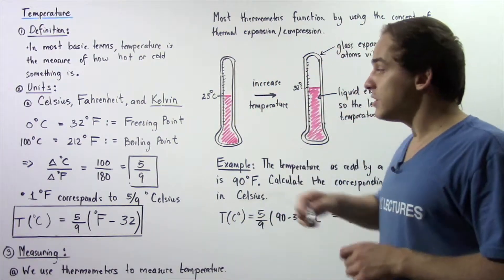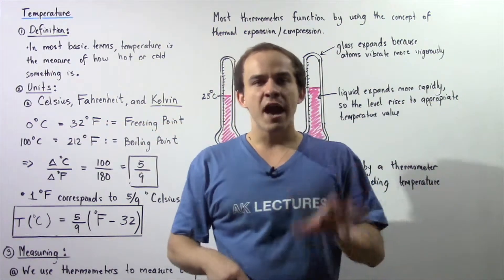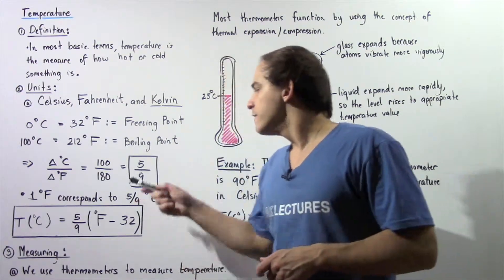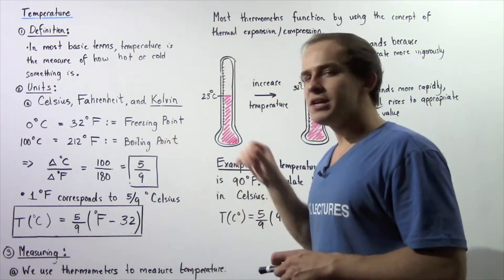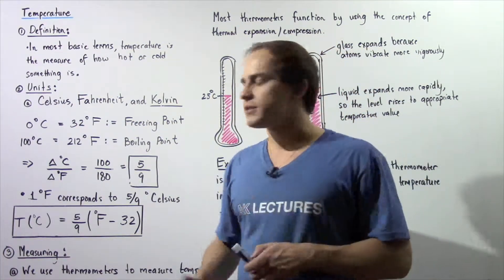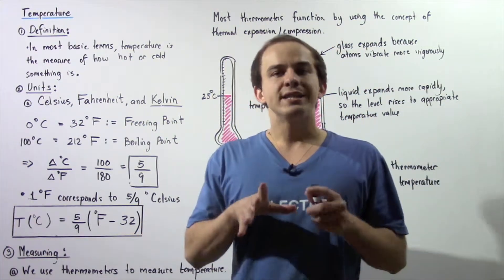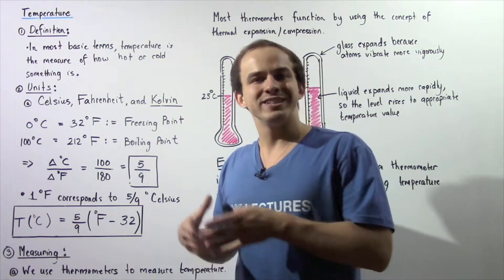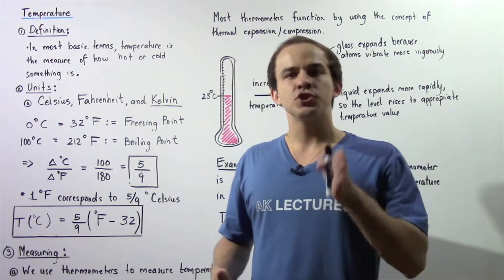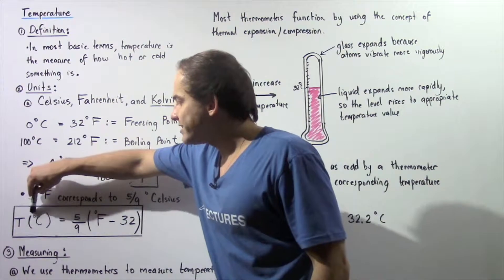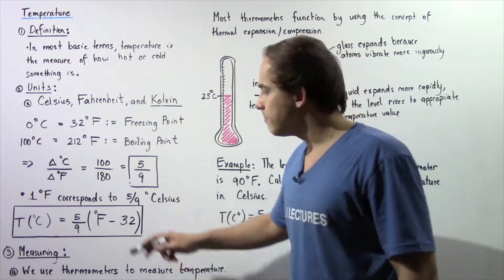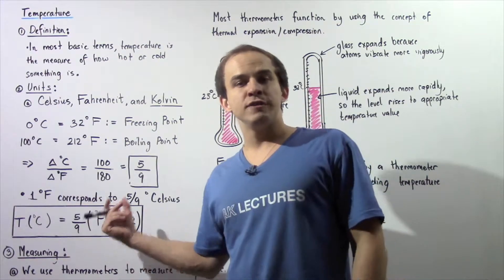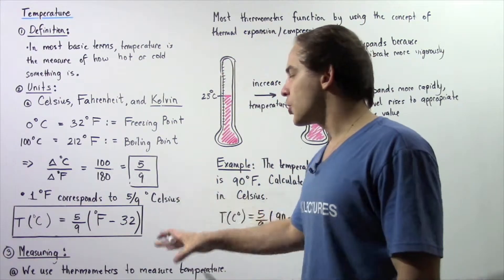That basically implies that one degree Fahrenheit corresponds to five divided by nine degrees Celsius. So using this ratio, we can deduce the following equation that gives us the temperature in Celsius knowing the temperature in Fahrenheit. The temperature in Celsius is equal to five divided by nine multiplied by F, our temperature in Fahrenheit, minus 32.